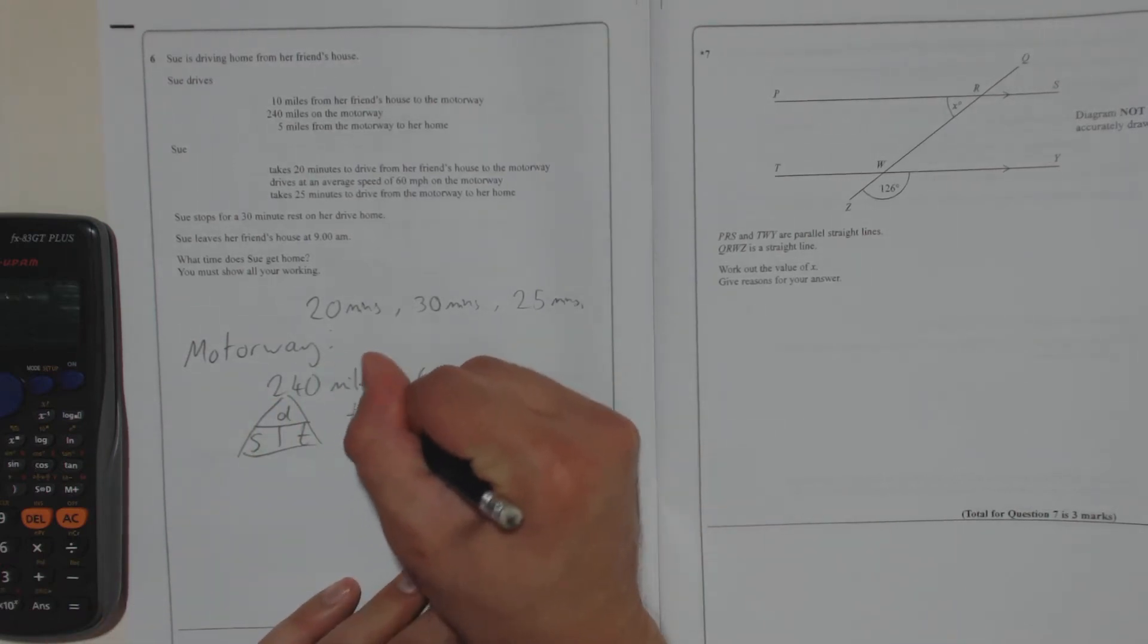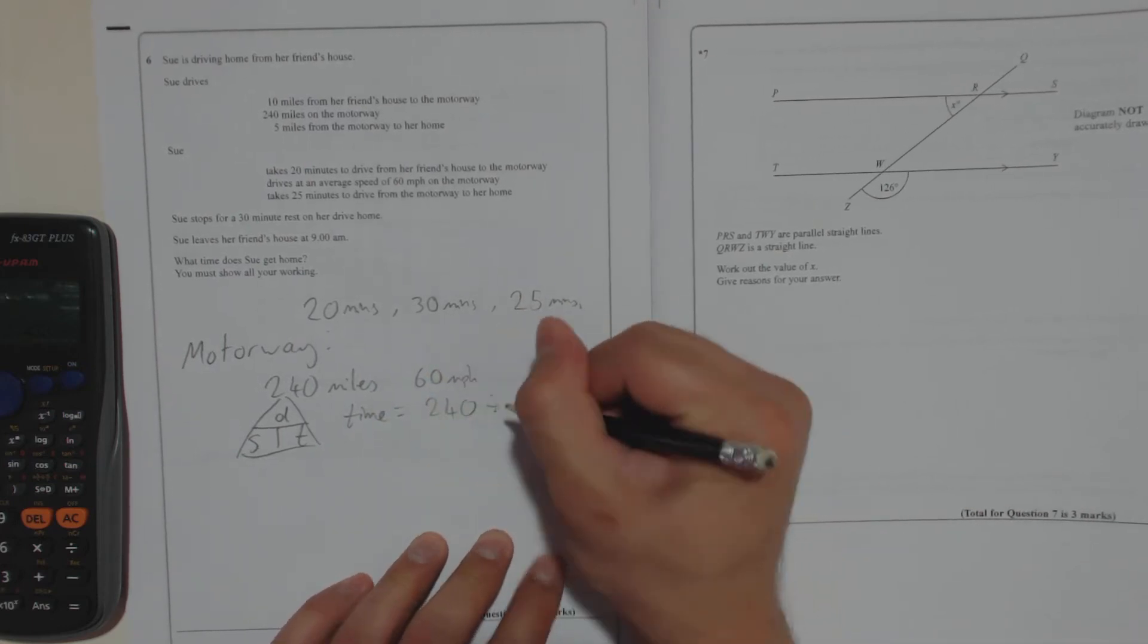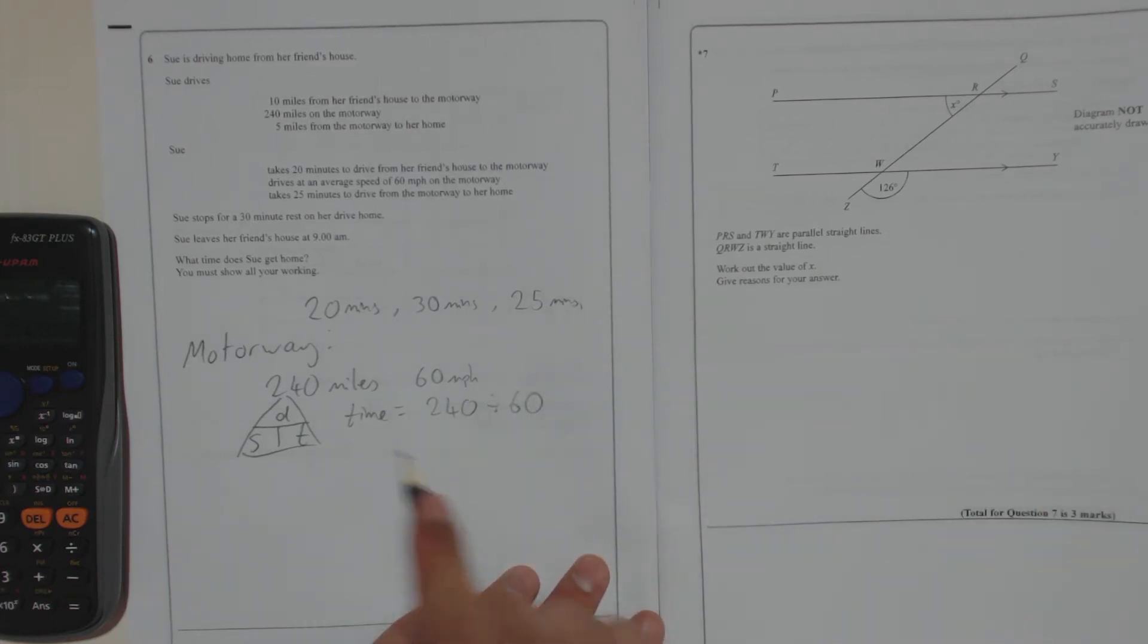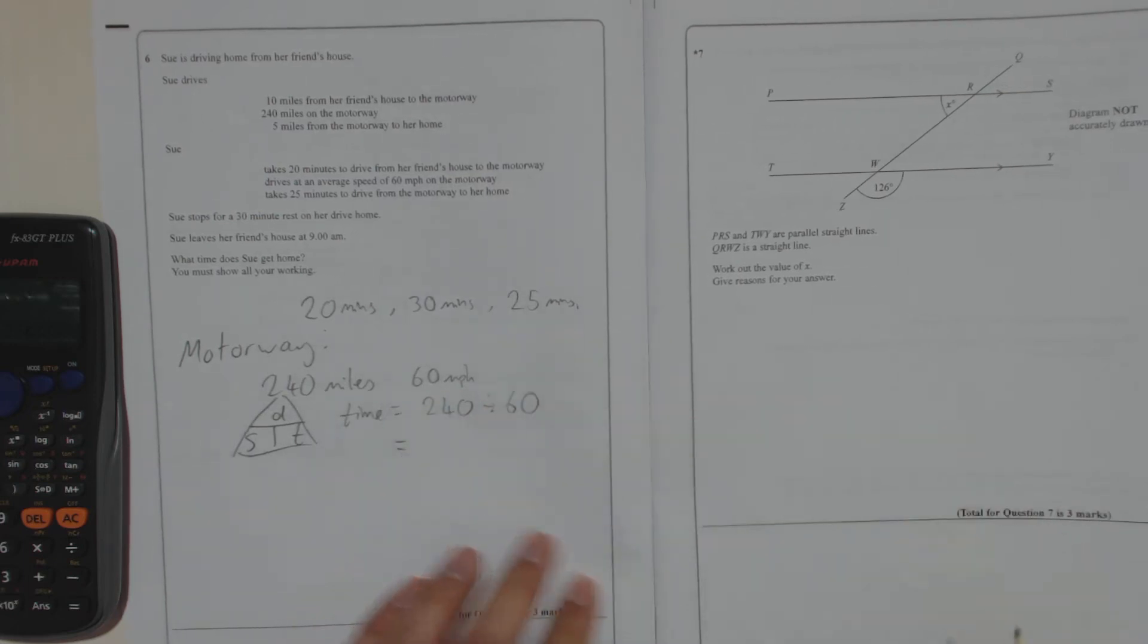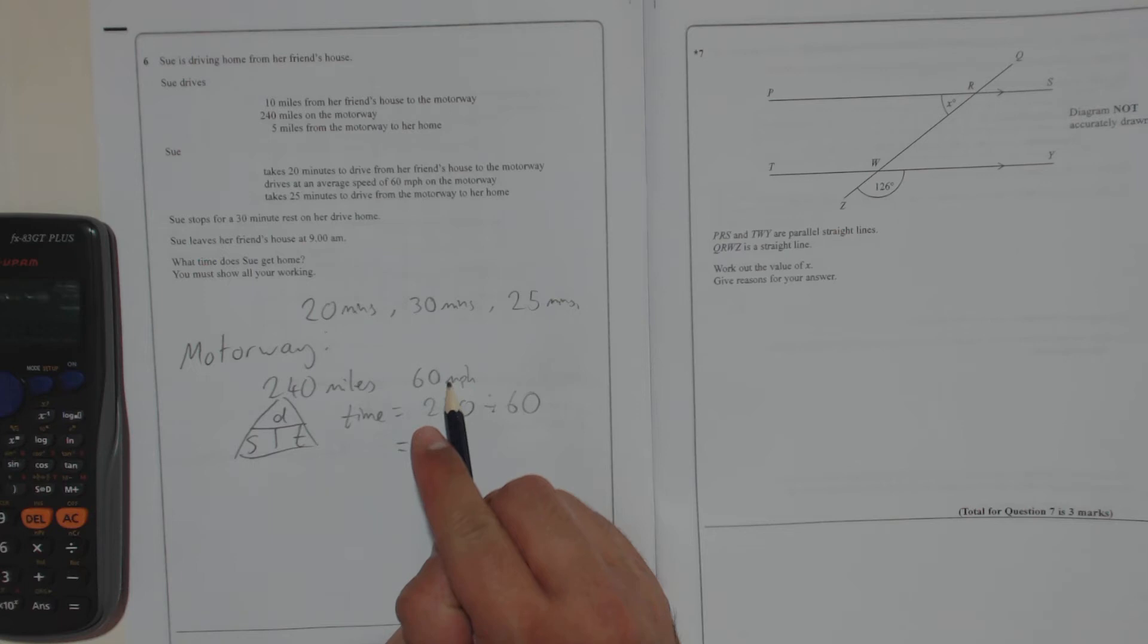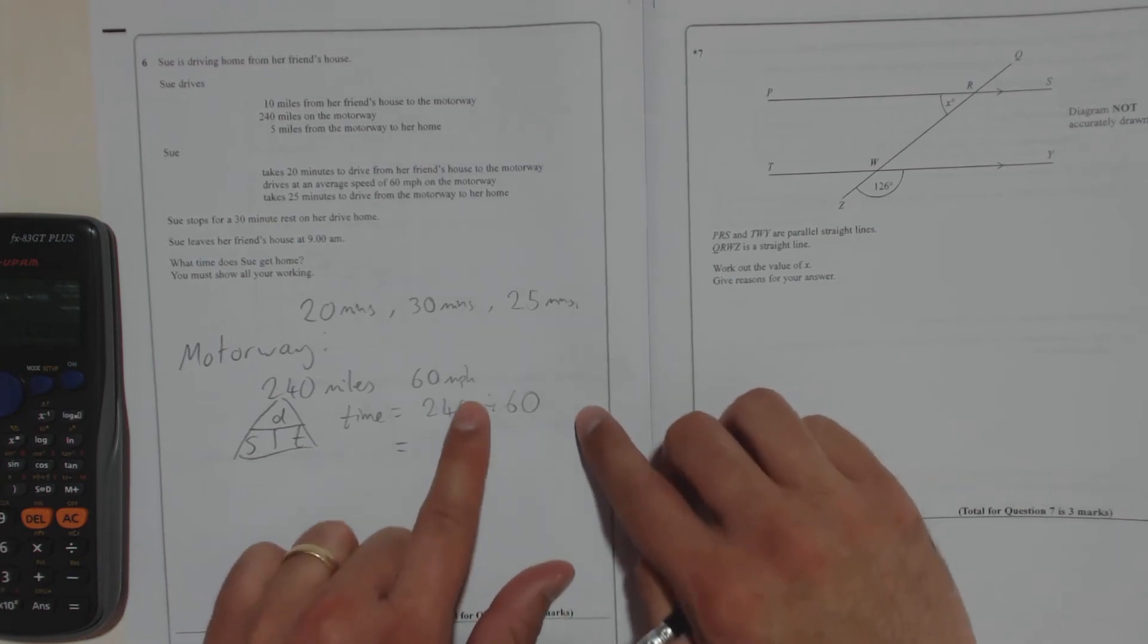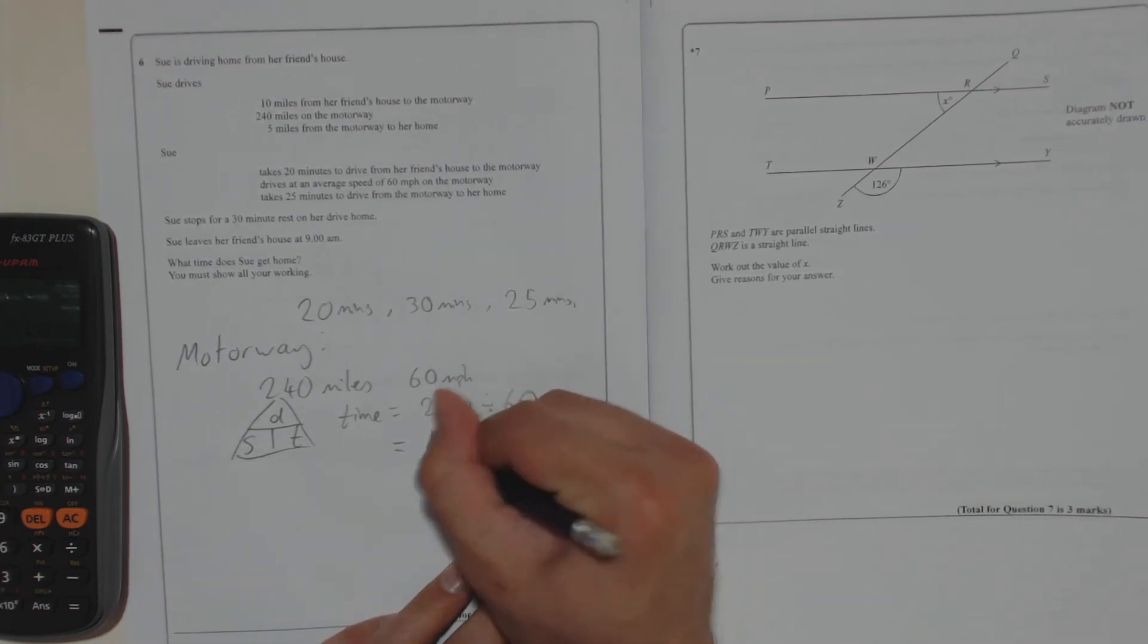So time equals distance, 240, divided by speed, 60. Make sure they're in units that match up. We've got miles, we've got miles per hour. So the answer we get will be hours. So, 60 miles per hour, 240 miles, 240 divided by 60 is the same as 24 divided by 6, which is 4 hours.